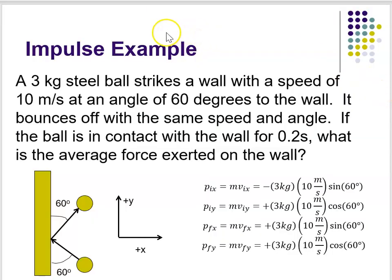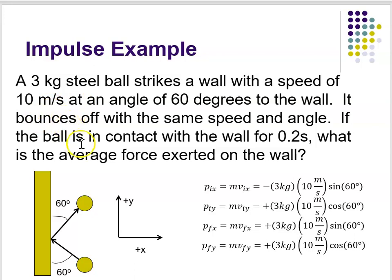Let's do an example problem with impulse. We have a three kilogram steel ball, and it strikes a wall with a speed of 10 meters per second at an angle of 60 degrees to the wall. It bounces off with the same speed and the same angle. If the ball is in contact with the wall for 0.2 seconds, what would you approximate as the average force exerted on the wall?